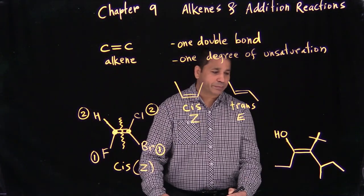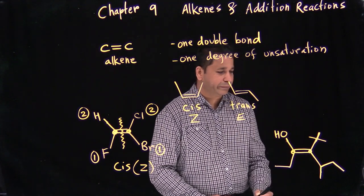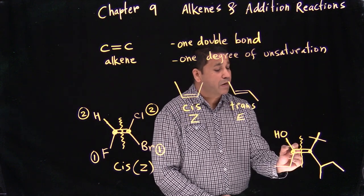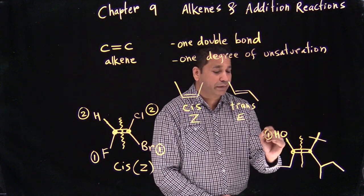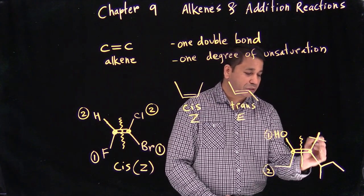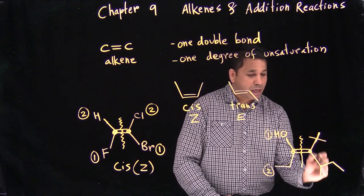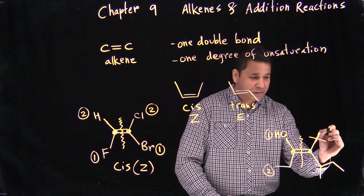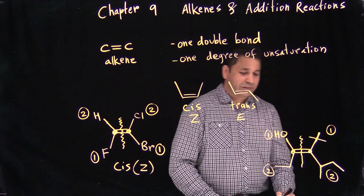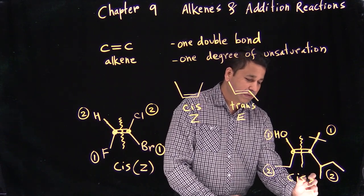Let's try another example. We divide the two carbons right in the middle and assign priorities. Oxygen gets number one priority; carbon gets number two. Comparing the other side, the longer carbon chain gets number one priority, and the shorter gets number two. Since the same-numbered priorities face the same side, this is also cis, or Z.